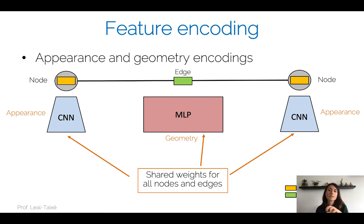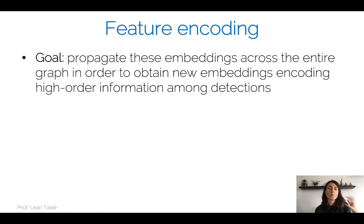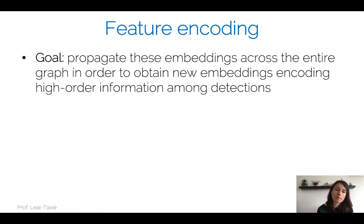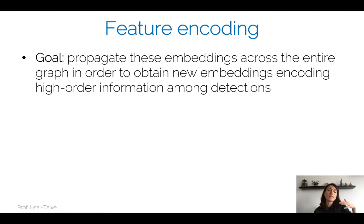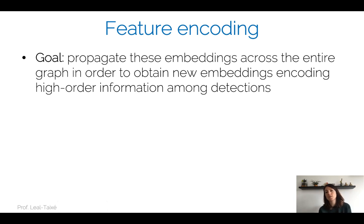Once we've defined our initial embeddings, the goal is to propagate them with the message passing steps we've seen — with node-to-edge and edge-to-node updates. The new embeddings will contain higher-order information among detections. You're going to look at detections several frames away and decide whether they represent the same person as you, the current node, or another person. By looking several frames ahead and behind, you can make a much more informed decision.